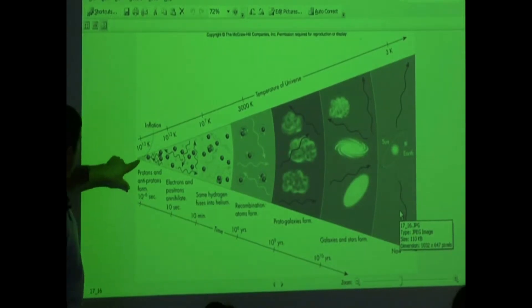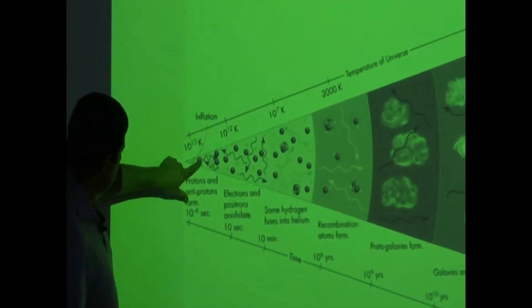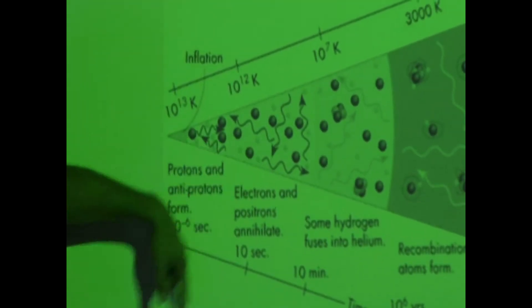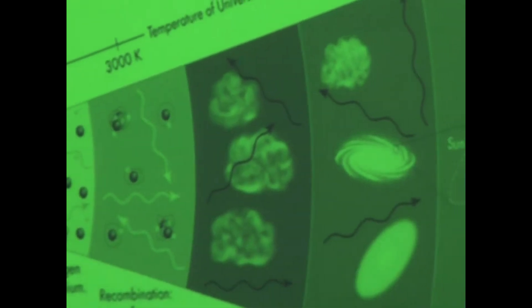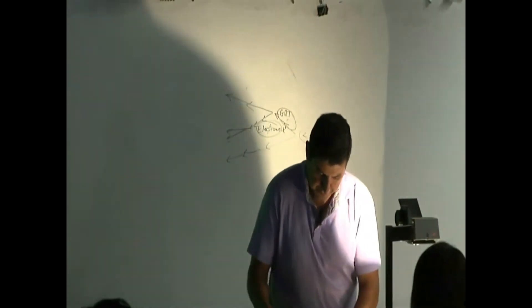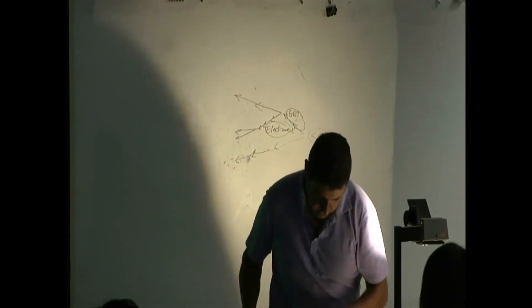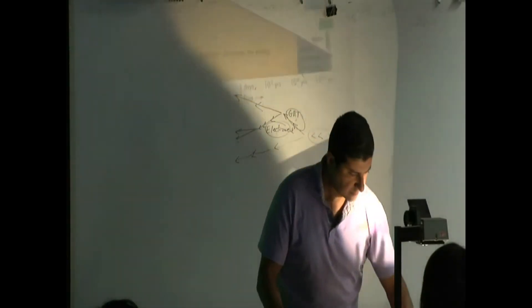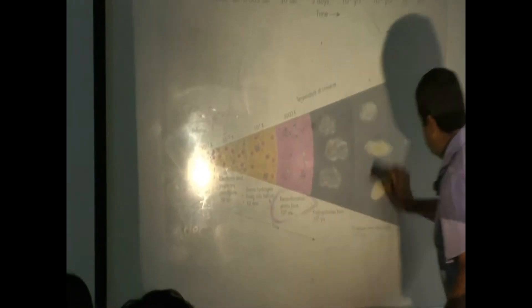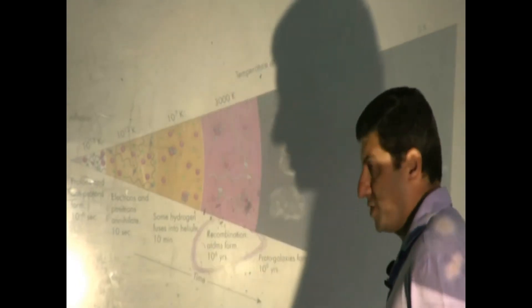This picture shows inflation happening, then protons and antiprotons forming, and electrons and positrons annihilating each other. Looking at the transparency, you can see the temperature of the universe cooling: 10 to the 13 Kelvin, 10 to the 12 Kelvin, 10 to the 7th Kelvin, 3,000 Kelvin. These are the major events happening at each temperature.